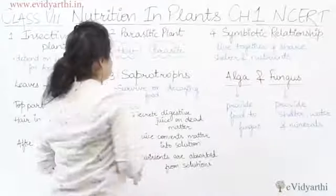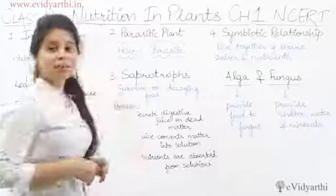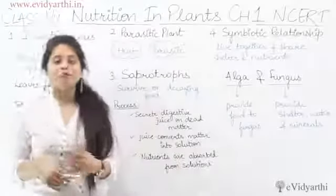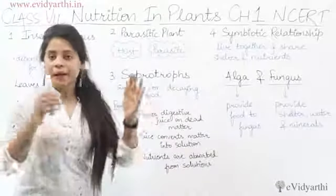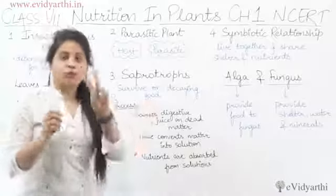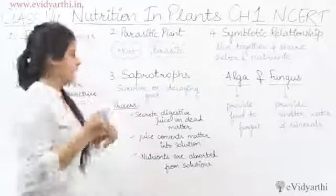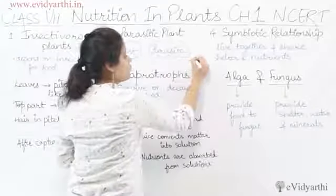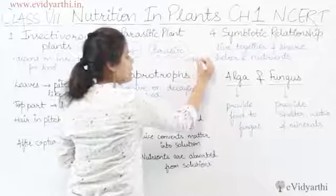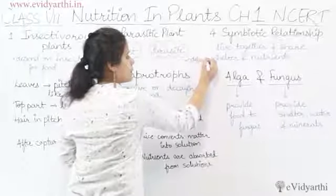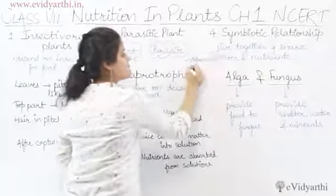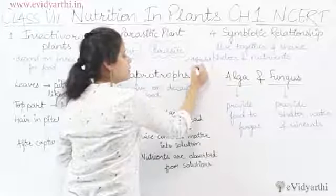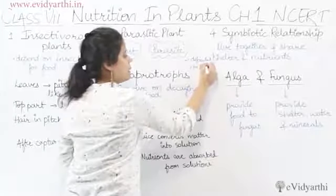Next, we have parasitic plants. Parasitic plants are those plants that depend on other plants. One plant is the one that is dependent — that is the parasite — and the other is the host.